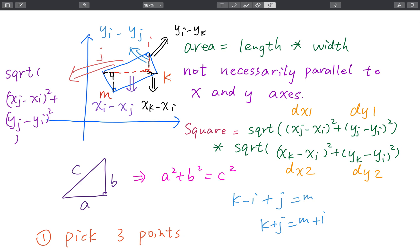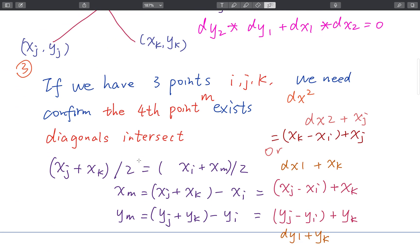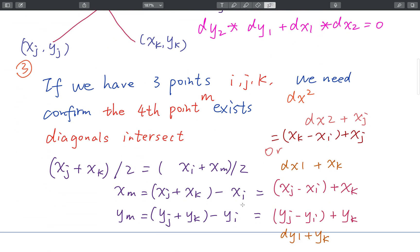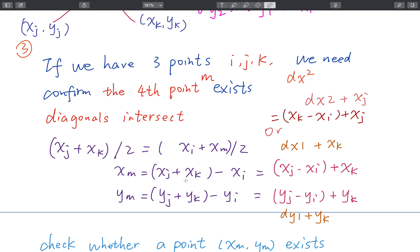So how to get the coordinate of these two points? Just XJ plus XK divide 2, that should equal to XM plus XI divide 2. So the same for the Y axis. So we get this. And you will find that actually we can combine XJ minus XI or XK minus XI, so that means both DX1 plus DK and DX2 plus XJ is correct.